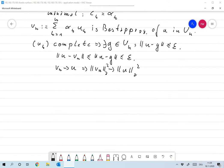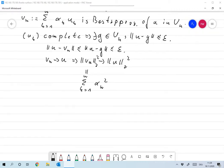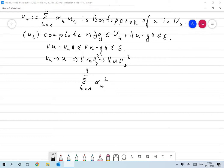And we already saw what that VN was. That's nothing but the sum from 1 to N alpha N squared. That's what we already had above. And so this converges to the sum from 1 to infinity alpha N squared.